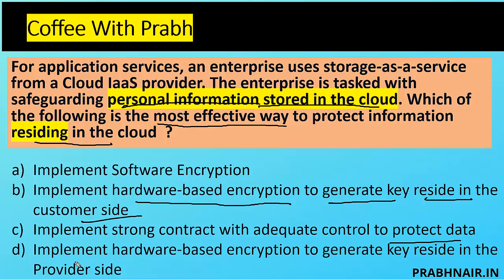If you keep the key with the provider, there is a risk of unauthorized disclosure of data, so D is removed. Software-based encryption is less secure than hardware-based, so A is also removed. We're left with B and C. A contract is a reactive control — if an issue happens, we resolve disputes according to the contract. So a contract alone isn't the most effective protection.